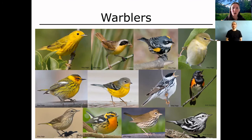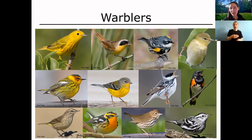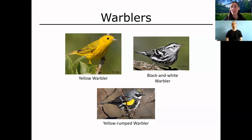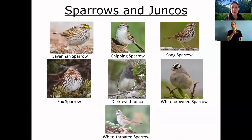Now we'll get to the warblers — sometimes considered the jewels of the songbirds. They're all tiny, really bright and colorful, always super active and hopping around. It's easy to become overwhelmed trying to figure out what warbler you're looking at when starting. Don't worry too much — enjoy them, collect as many clues as you can, and if all you can tell is 'that's a warbler,' you're doing great. There are three you can try to focus on that are more common near town: the Yellow Warbler, the Black-and-white Warbler, and the Yellow-rumped Warbler. Note that male and female warblers also look different from each other.